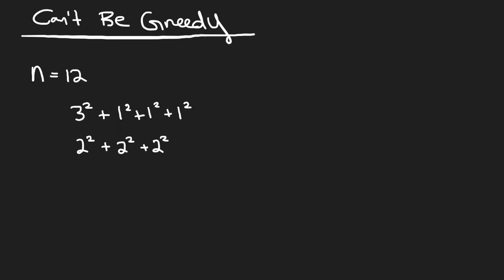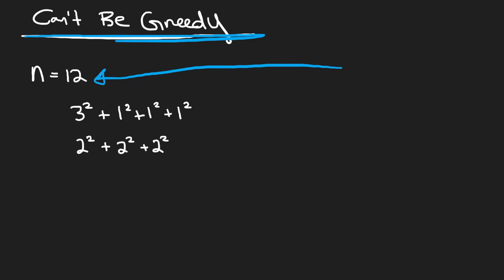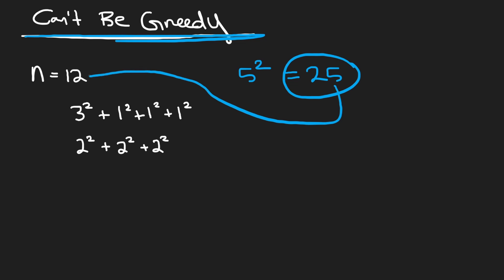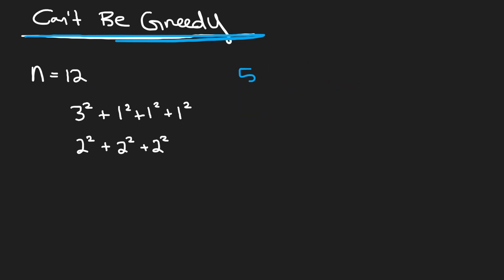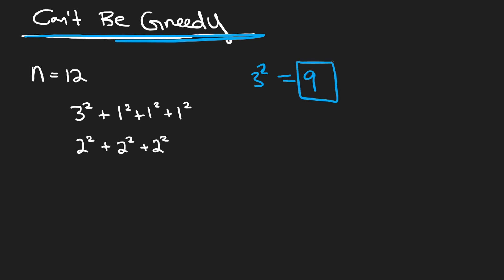Your first idea is probably going to be: can you just be greedy? Like for n equals 12, what's the largest perfect square that's less than or equal to 12? 5 squared is 25 — that's too big. 4 squared is 16 — still too big. So we go to 3 squared, which is 9. So we start with the biggest perfect square available that's less than or equal to 12.